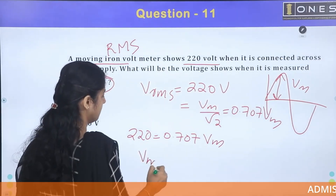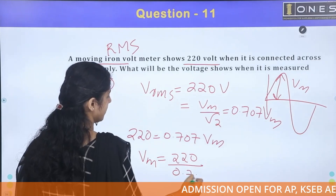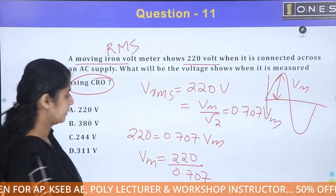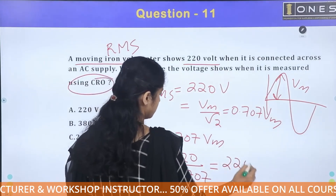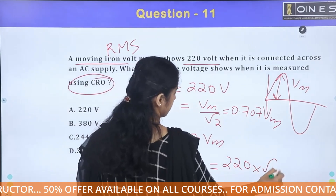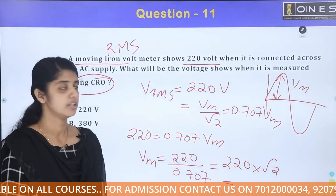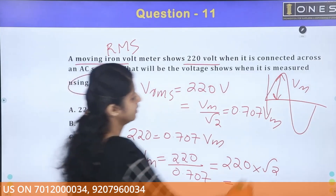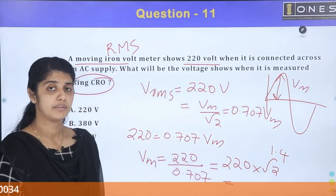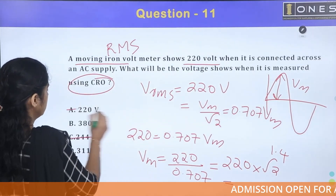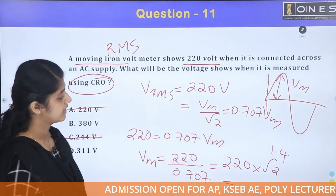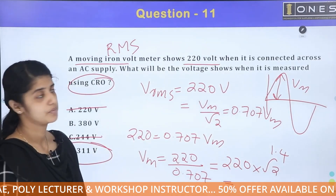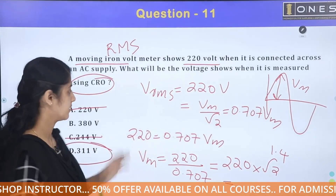Vm = 220 divided by 0.707, and since 0.707 = 1/√2, dividing by 0.707 is the same as multiplying by 1.414. So Vm = 220 × 1.414, which gives approximately 311 volts. The answer is 311 volts.